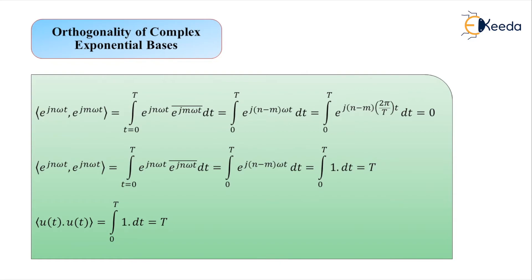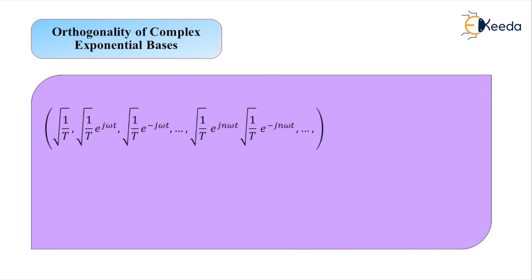To satisfy orthonormality, we need to scale the functions by the constant √(1/T). Applying this scaling to both the unit function and the complex exponentials, we obtain the orthonormal basis set: {√(1/T), √(1/T)·e^(jωt), √(1/T)·e^(−jωt), ..., √(1/T)·e^(jnωt), √(1/T)·e^(−jnωt)}.